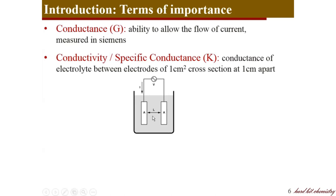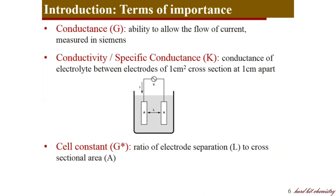As shown here in this cell, the electrodes are of area of cross section A and the distance between them is L. If the area of cross section A is 1 cm² and the distance L is 1 cm, the conductance measured will be the specific conductance or conductivity. The ratio L to A — the distance between electrodes to the area of cross section — gives the cell constant, which relates conductance and conductivity through those equations.